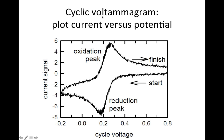The cyclic voltammogram plots current as a function of the potential on your working electrode. You go from high to low voltage, starting at a high voltage with not much current. Eventually, once the voltage gets low enough, you start measuring a reduction current. The current peaks, then it diminishes. Now you turn the voltage around and start measuring an oxidizing current. It peaks, and then you finish — that's one cycle of your cyclic voltammogram.